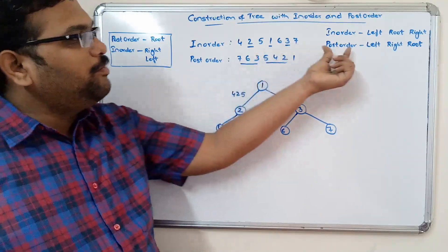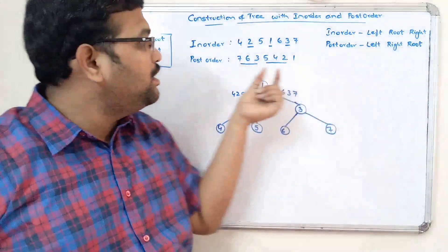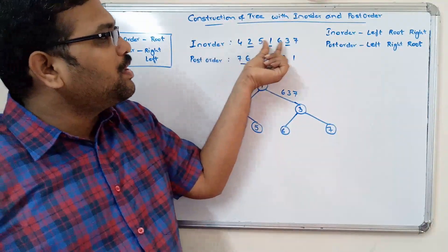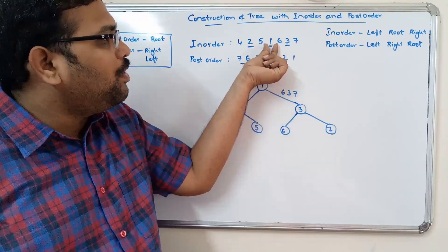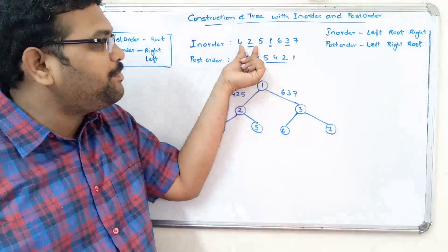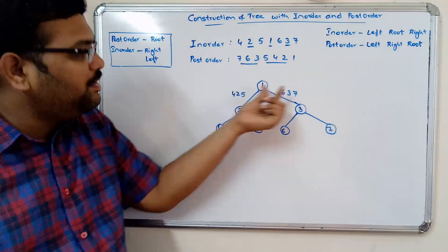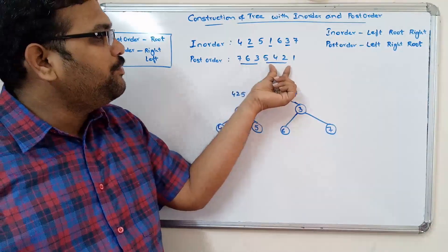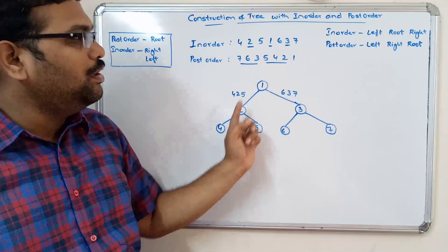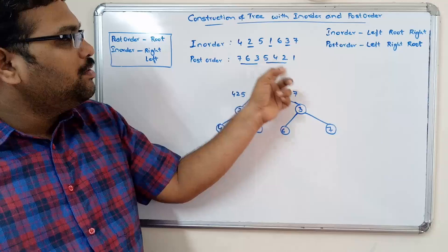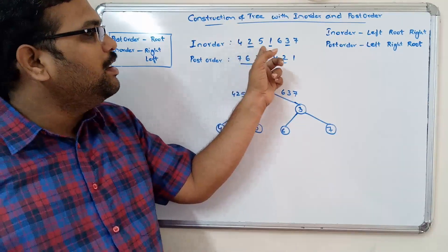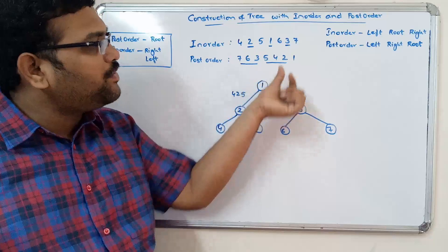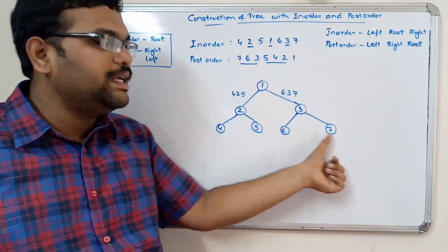With the help of postorder, we get the root because the last element is the root. Here in the postorder the last element is 1, so 1 is the root. In inorder — left, root, right — all elements to the left of the root are the left subtree and to the right are the right subtree. So 4, 2, 5 and 6, 3, 7. In 4, 2, 5 using postorder, the last element is 2, so 2 is the root node. 4 is to the left and 5 is to the right of 2, giving left child 4 and right child 5. Similarly, 3 is the root node of the right subtree, 6 is left child and 7 is right child.